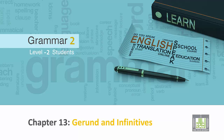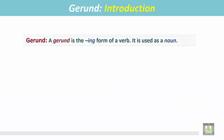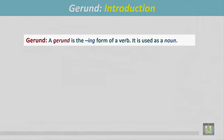Grammar 2 for level 2 students. Chapter 13: Gerunds and infinitives. Gerund introduction. A gerund is the -ing form of a verb, and it is used as a noun.